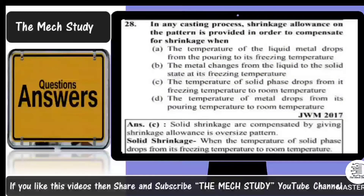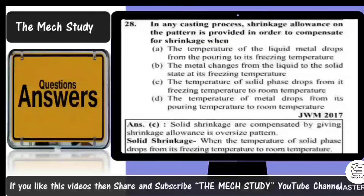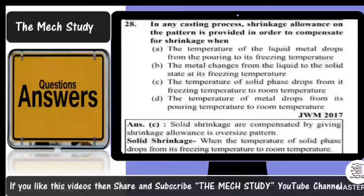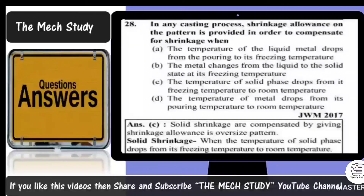Next question: in any casting process, shrinkage allowance on the pattern is provided to compensate for shrinkage when — option A: liquid metal temperature drops from pouring to freezing; option B: metal changes from liquid to solid at freezing temperature; option C: solid phase temperature drops from freezing to room temperature; option D: metal temperature drops from pouring to room temperature. Solid shrinkage occurs when the solid phase temperature drops from the freezing point to room temperature. Shrinkage allowance on the pattern compensates for this, so option C is correct.